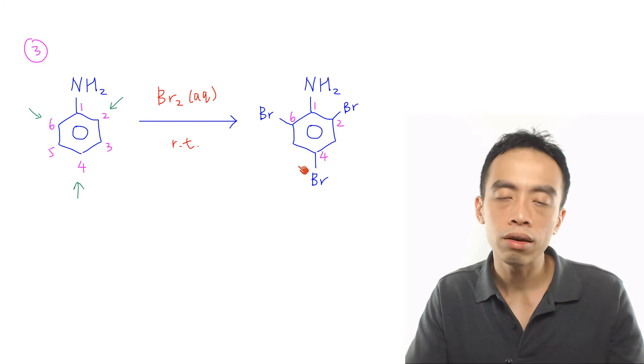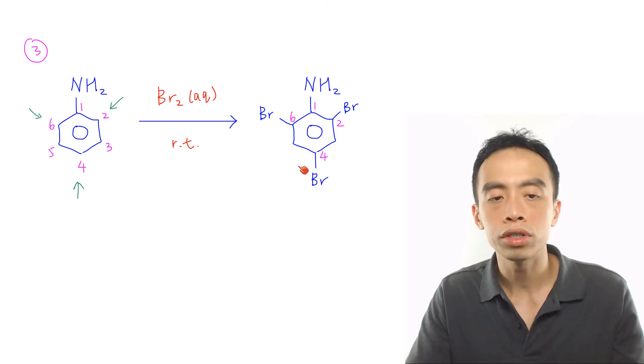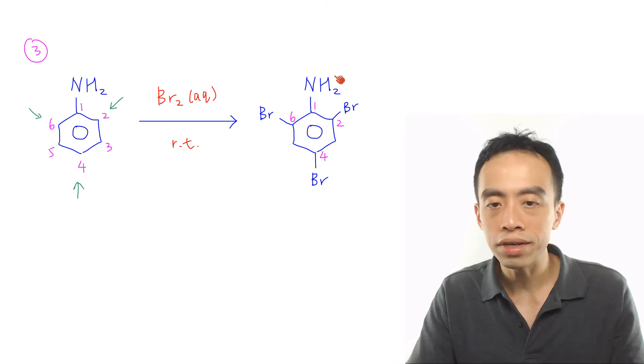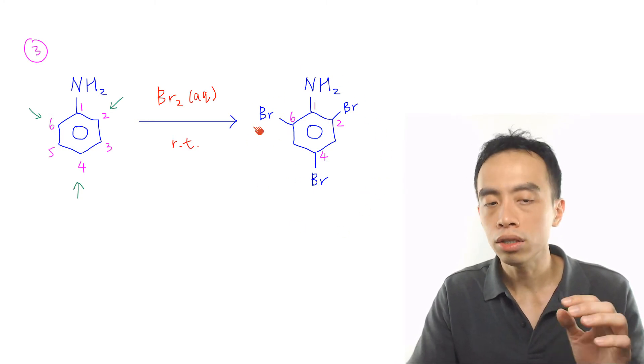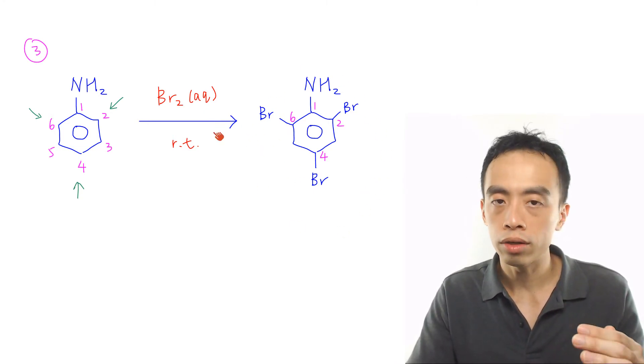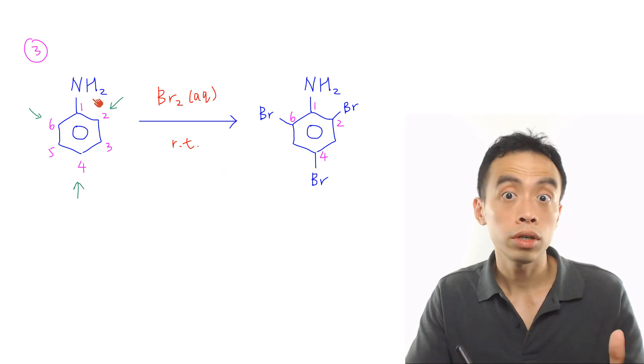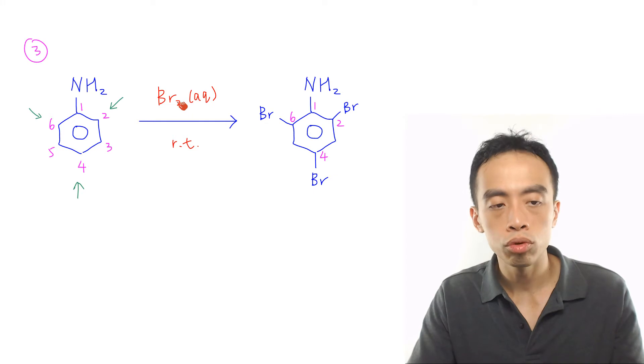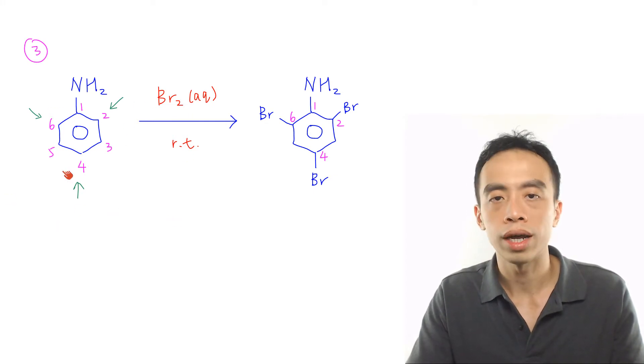Third reaction involving phenyl amine is the tri-substitution of bromine to form 2,4,6-tribromo phenyl amine. This is done using aqueous bromine at room temperature. Take note, NH2 group is a highly activating group. That's why in the presence of aqueous bromine, a tri-substitution product is possible.